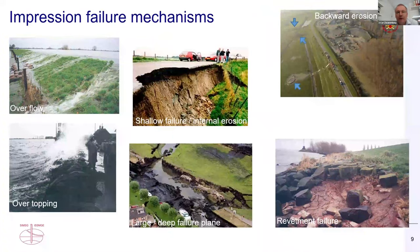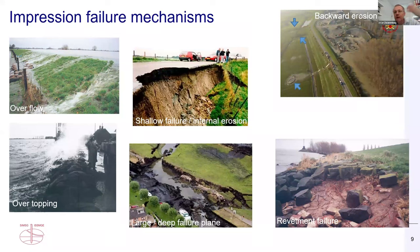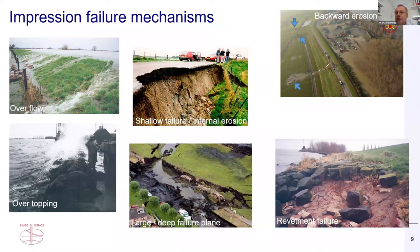The variety in dykes and levees is also reflected in the failure mechanisms we observe. These failure mechanisms might interact and strengthen each other, or slow each other down. On the top left is overflow, where we have a continuous flow of water over the crest of the dike. In contrast, overtopping at the bottom left is a discontinuous water flow due to wave action, causing erosion at the land side. At the center, we see slip plane failure - a shallow one covering the core of the dike - and a large failure plane including the dike and subsoil.